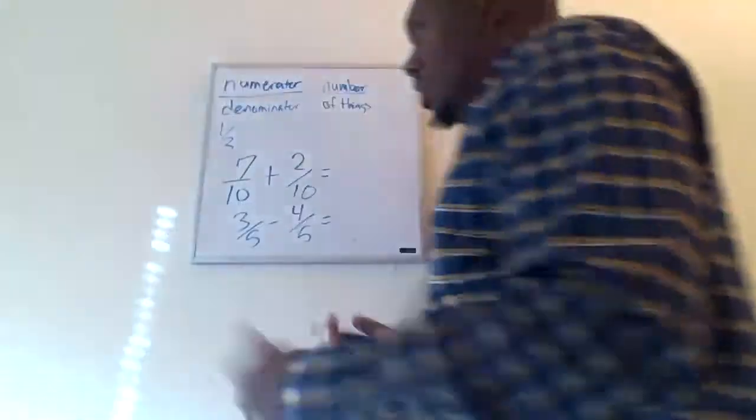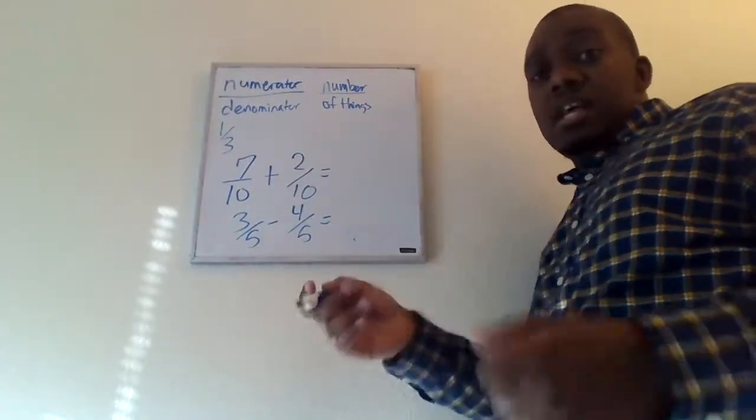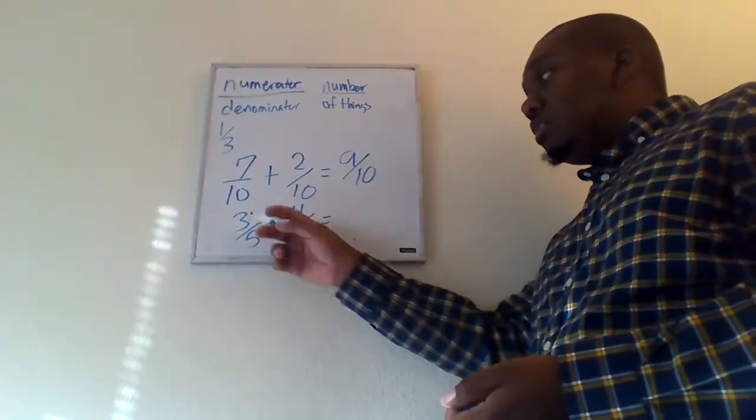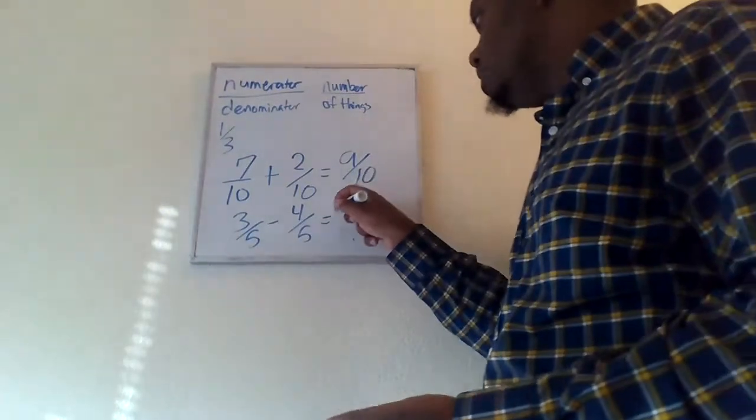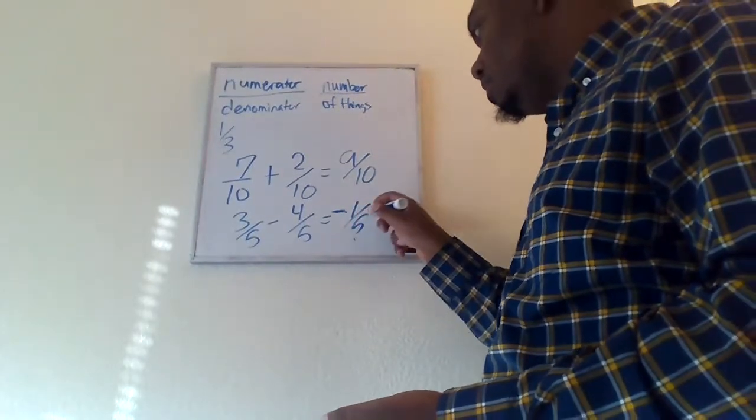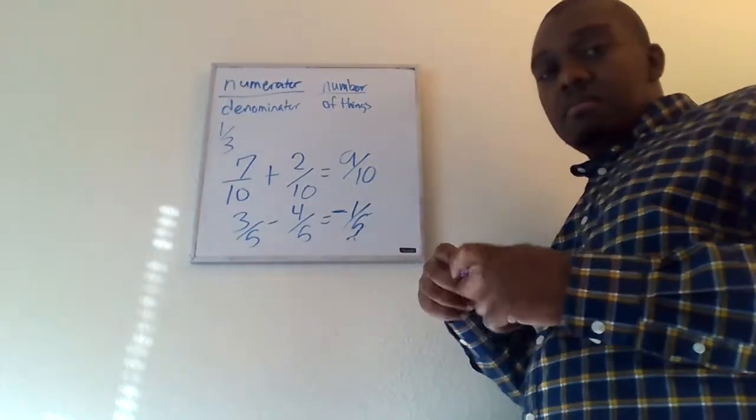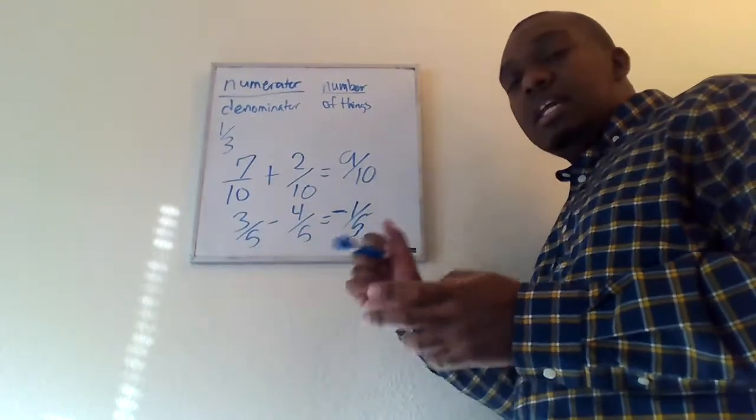So if they're of the same, if they're the same things, you can add or subtract them all day long. So we had seven tenths plus two tenths, or let's say we're doing three fifths minus four fifths. You have no problem doing this. Well, these are seven of the tenths and these are two of the tenths. Together that's just nine of the tenths. Okay, well, this is three of the fifths, and then you need to take four of the fifths. Well, that means that there's a negative one of the fifths left over.